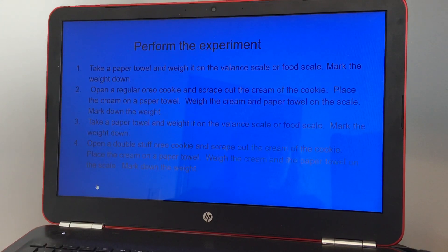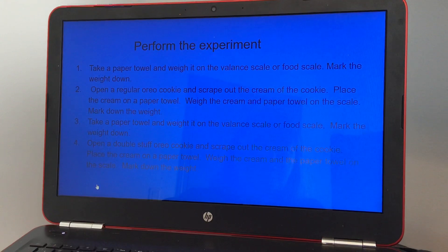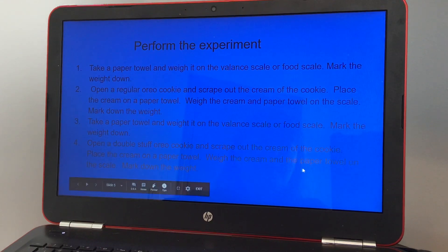And then you're going to write down that weight. And then you're going to take another paper towel and weigh that as well. Mark the weight down and then open a double stuffed cookie and do the same. Scrape out the middle of the cream and place the cream on the paper towel. Weigh the cream and the paper towel on the scale. Mark down the weight.